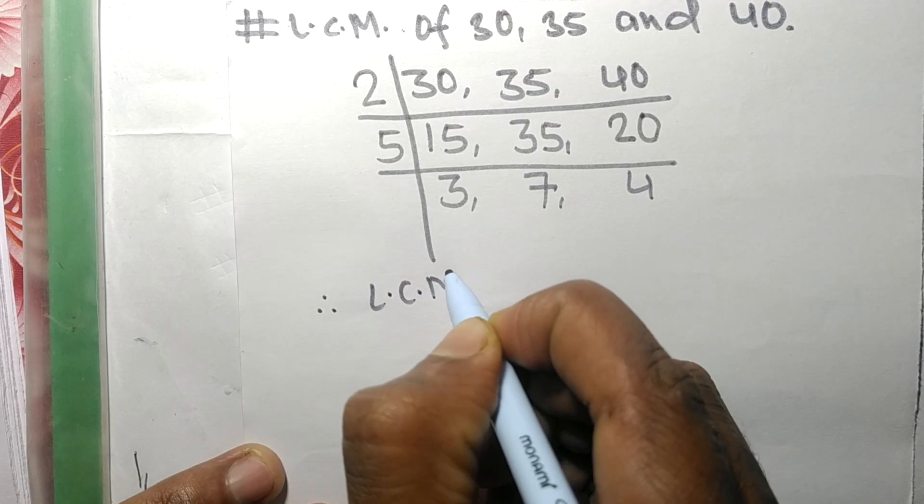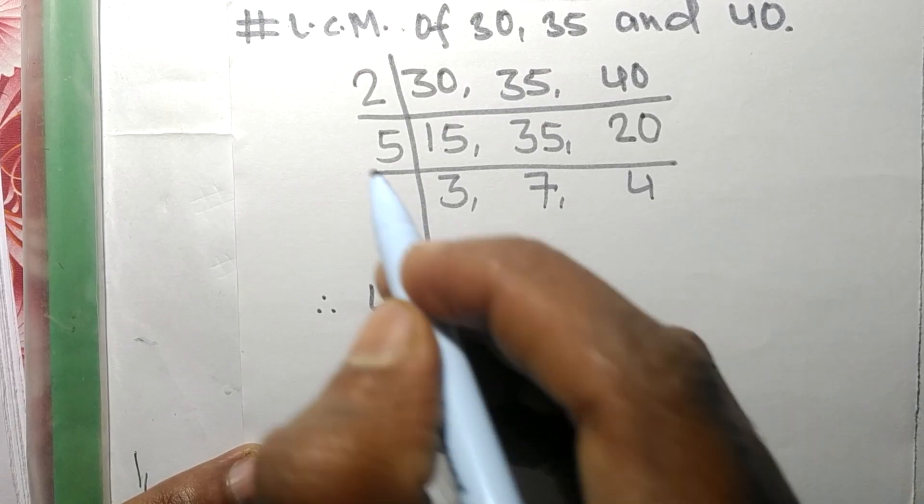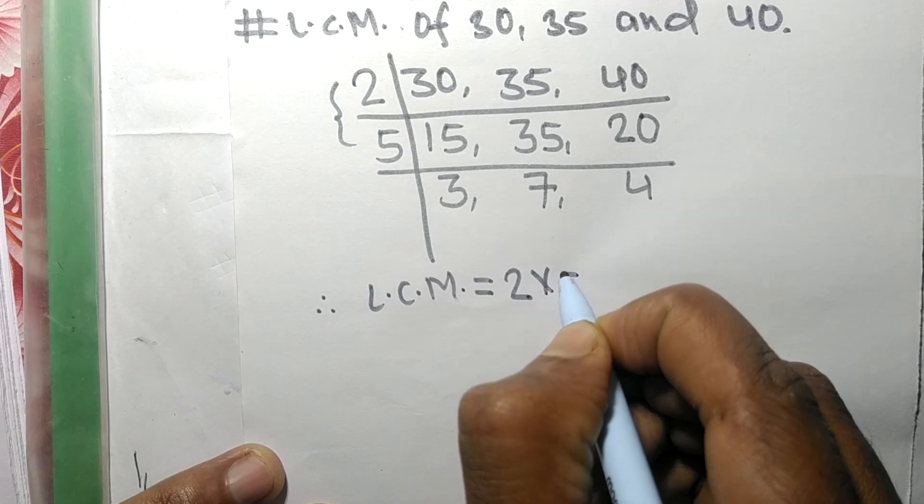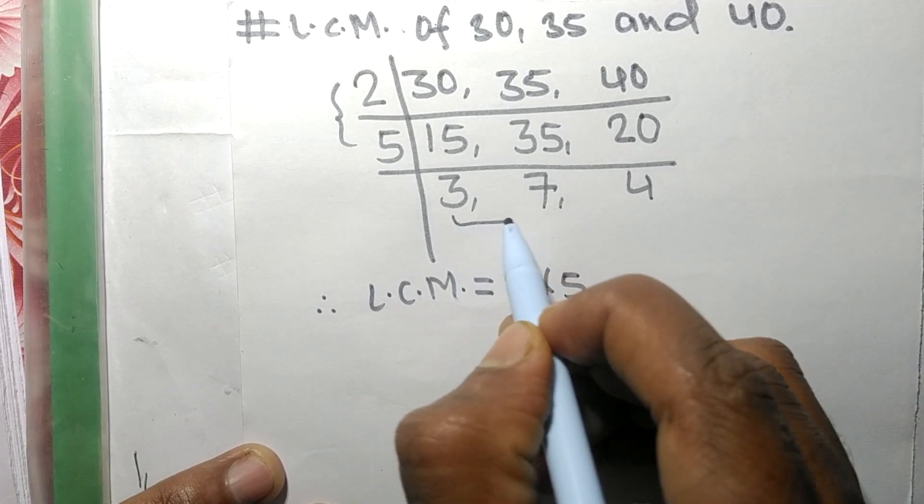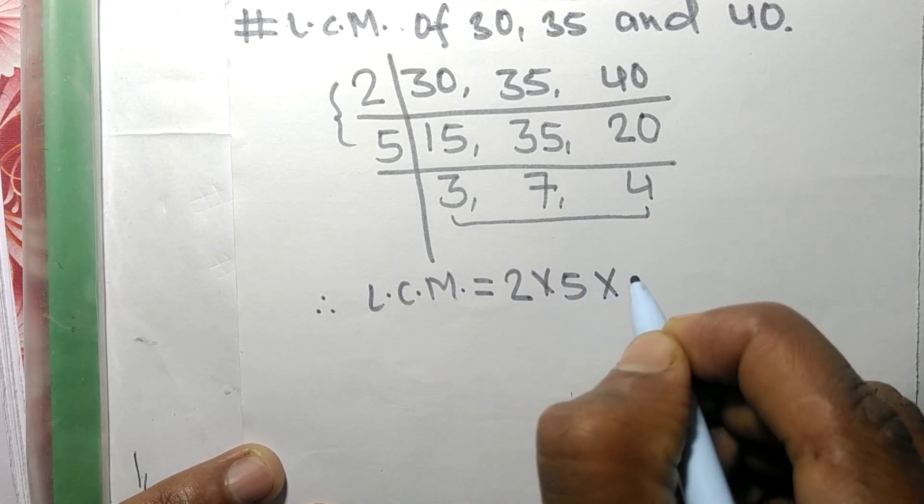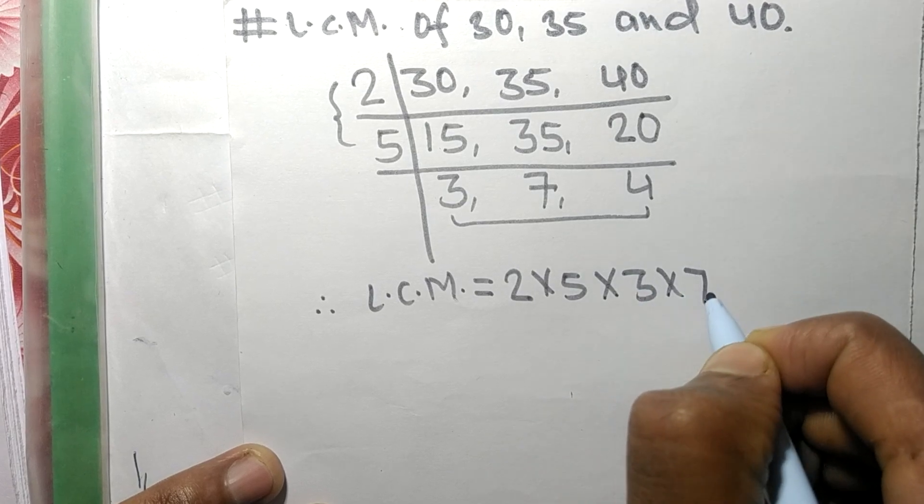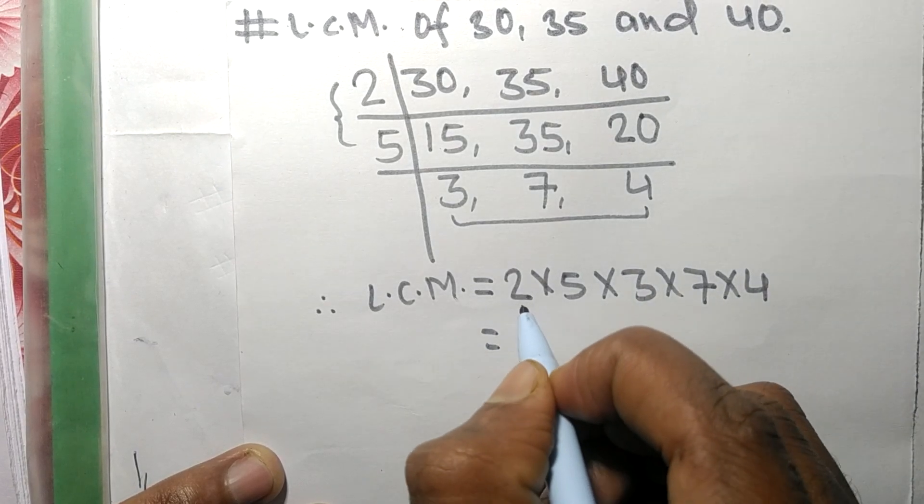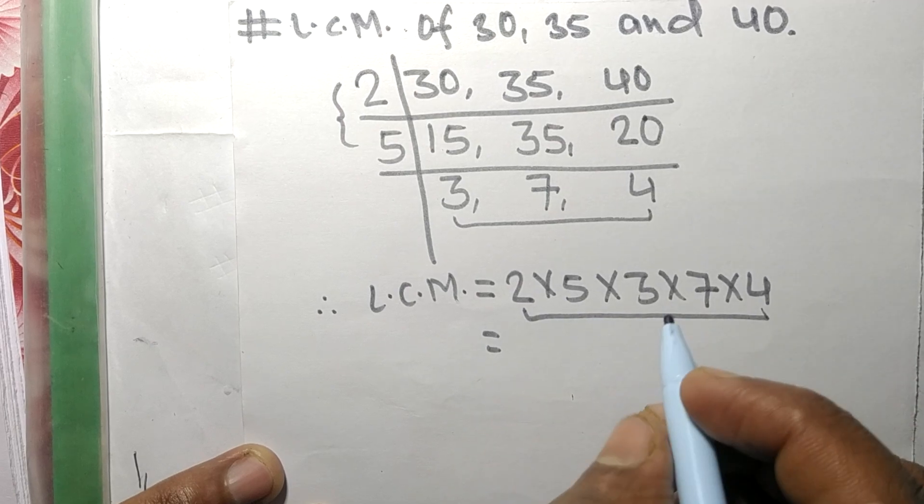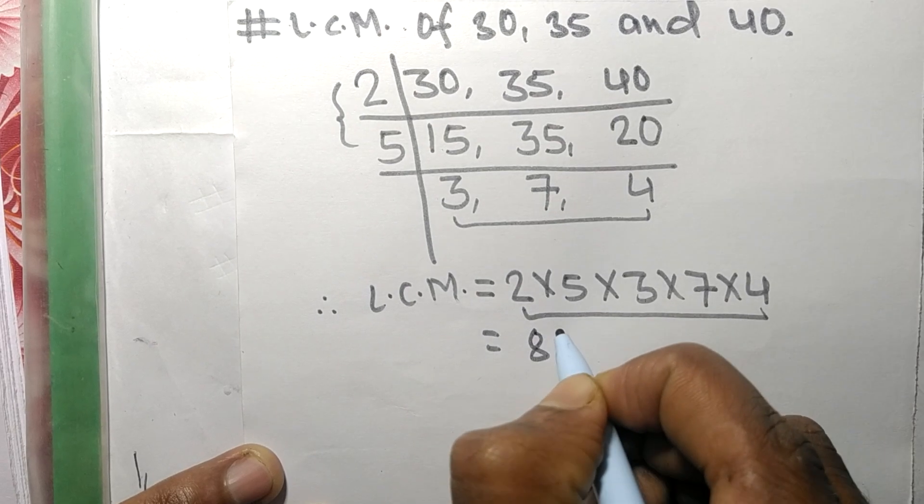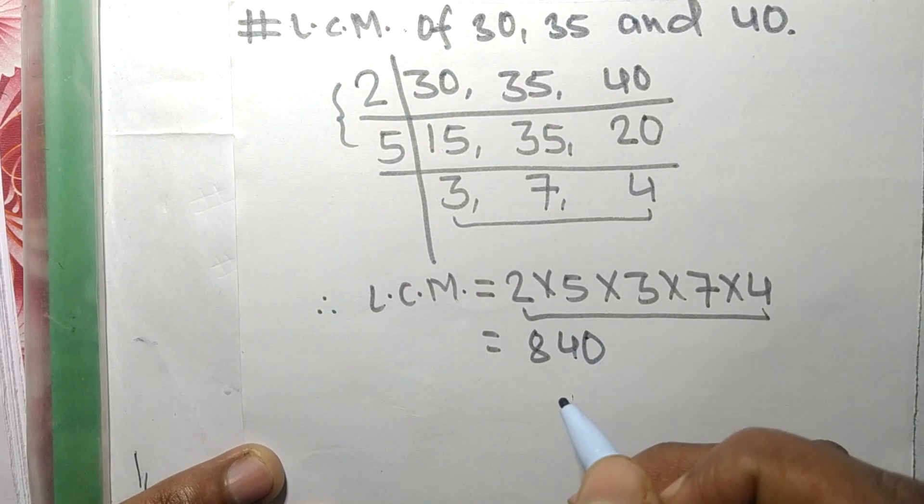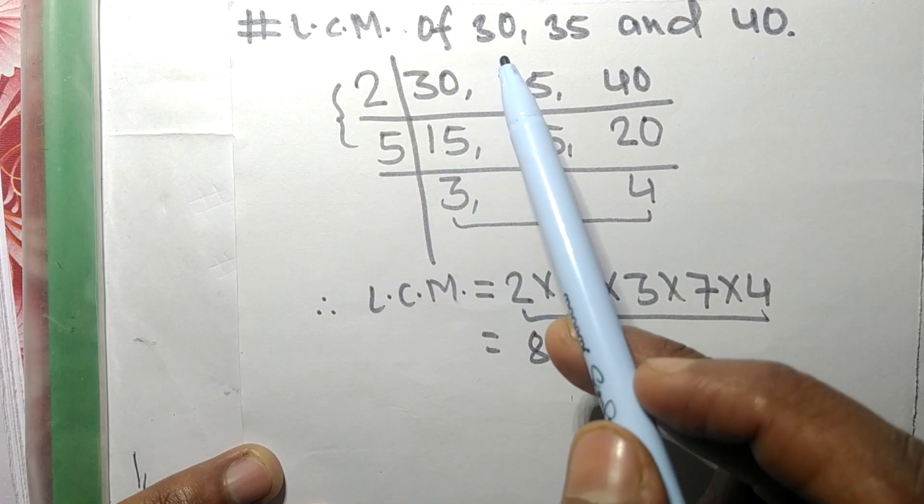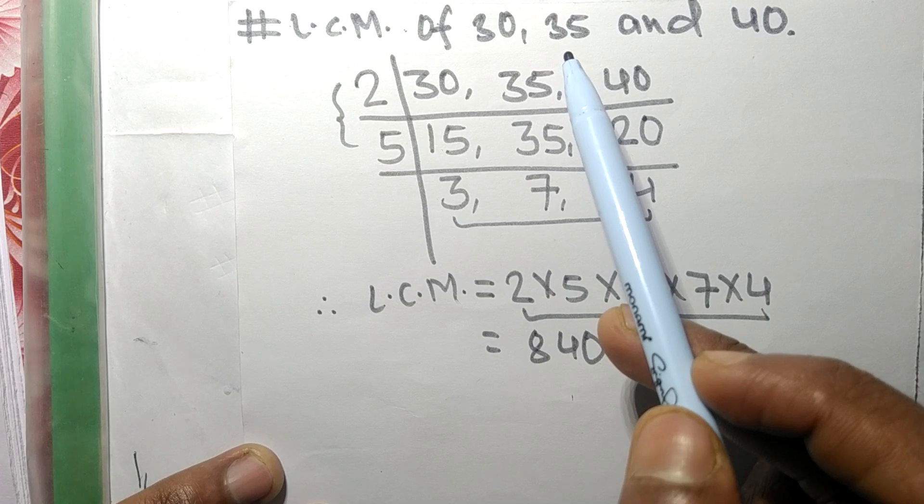the LCM is equal to, from this side it is 2 times 5, and from this side it is 3, 7, and 4. By multiplying all these numbers we get 840. So 840 is the LCM of 30, 35, and 40.